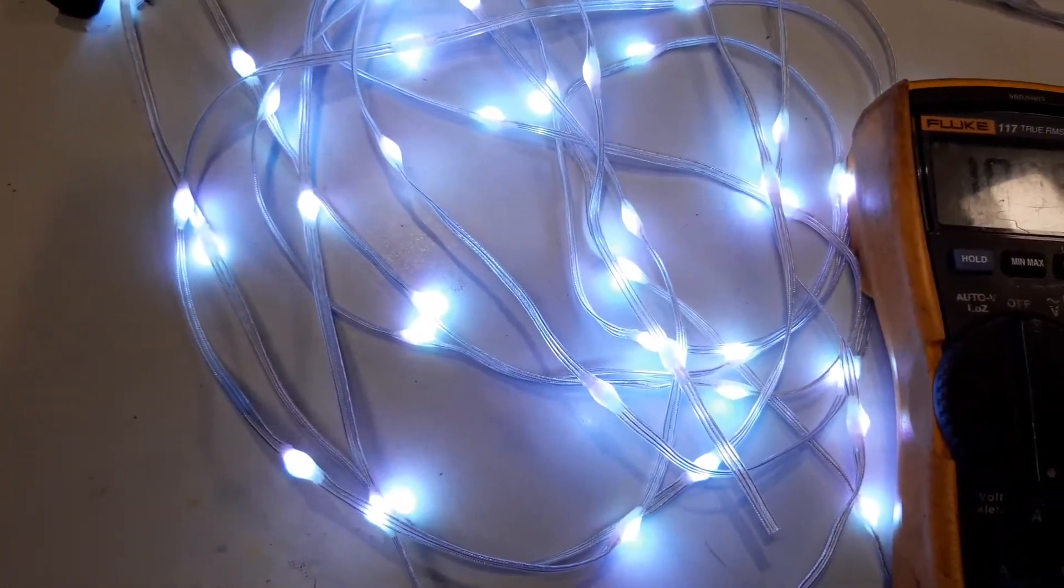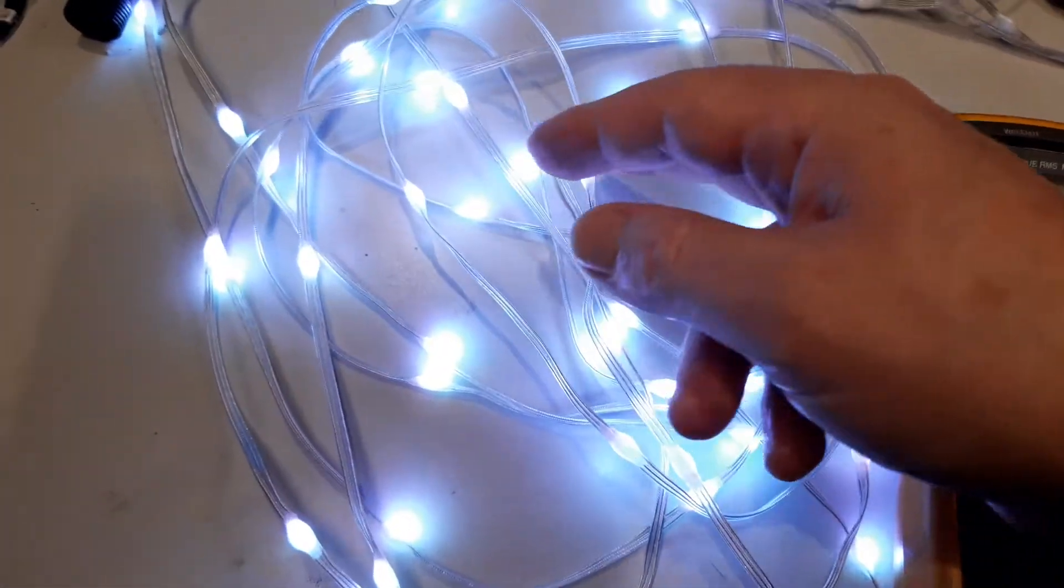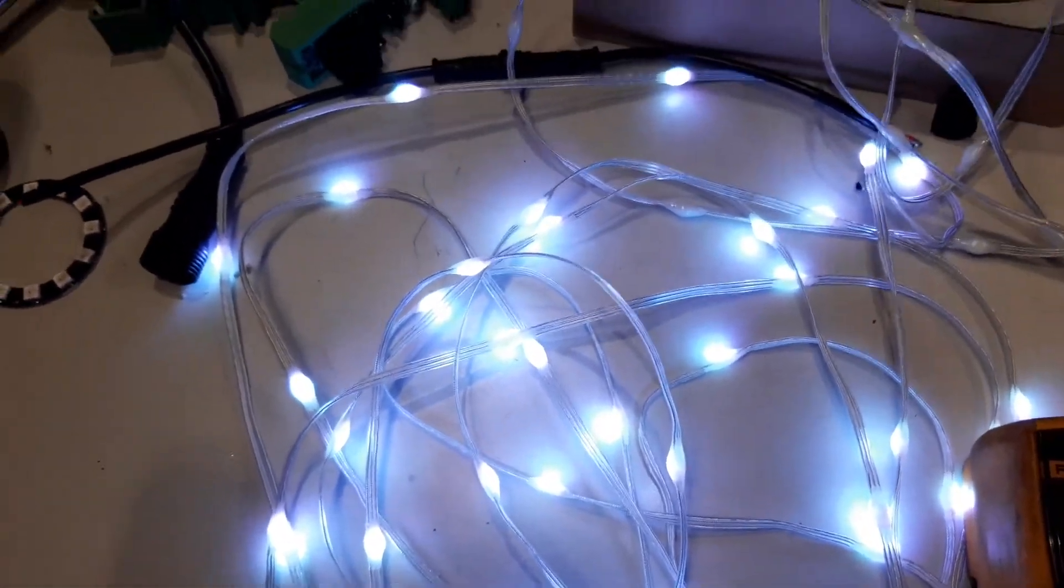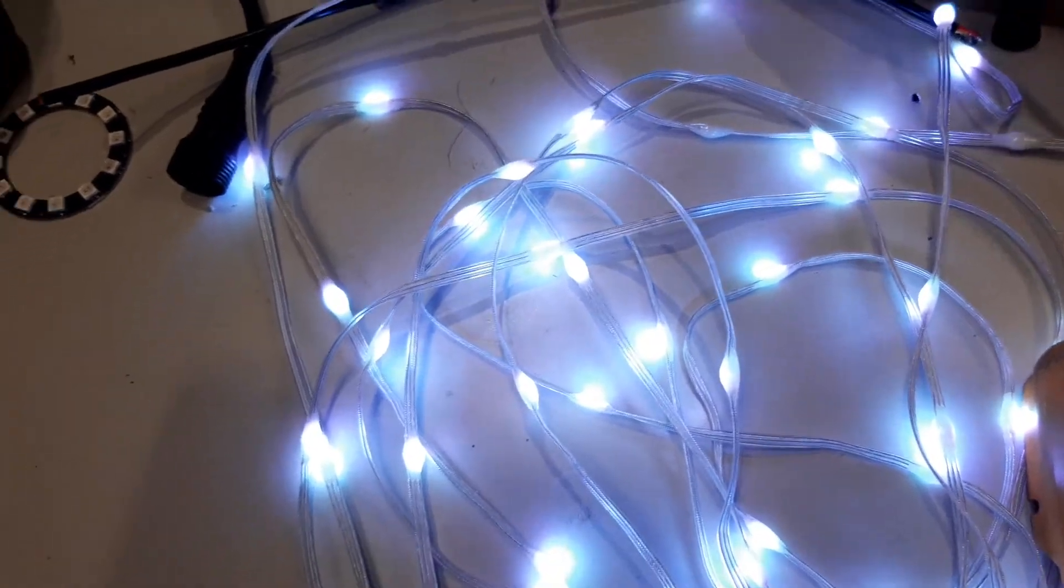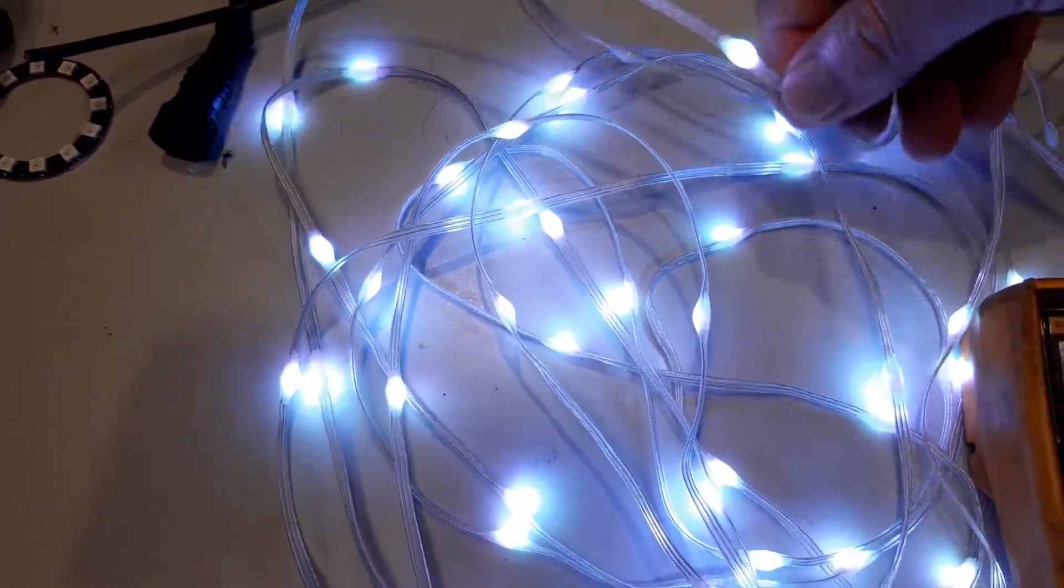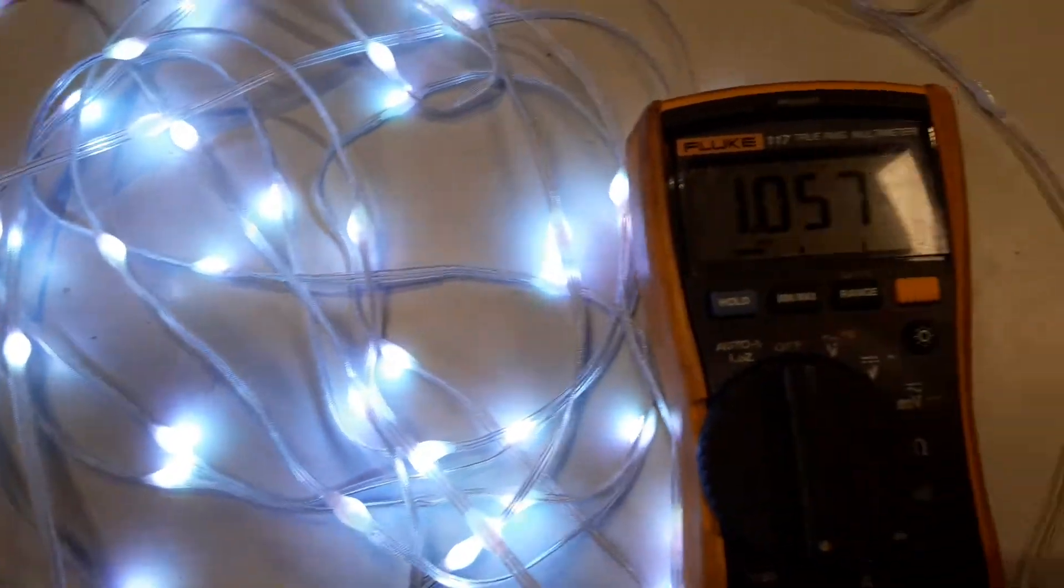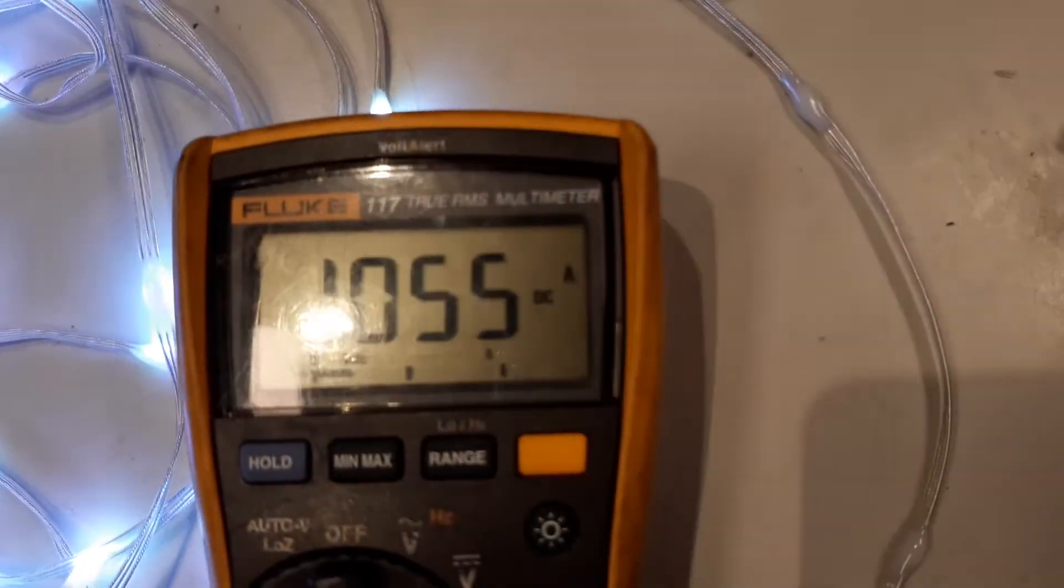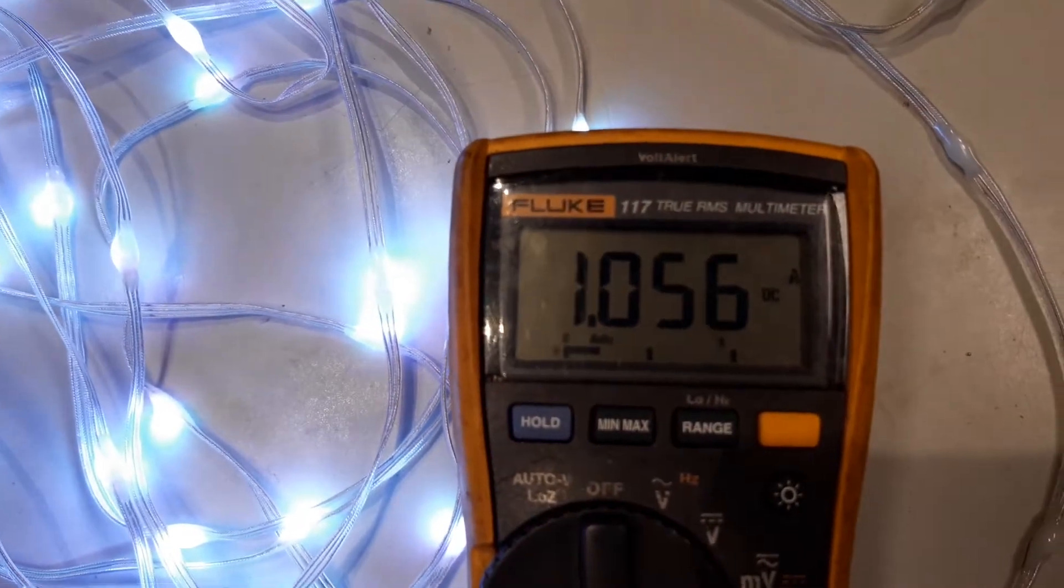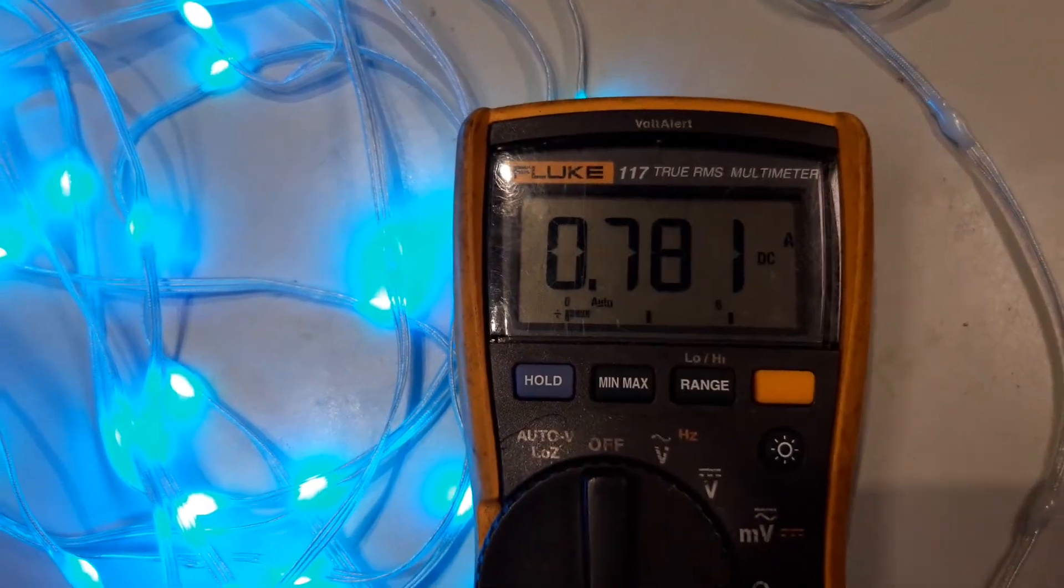As you can see, that string of 50 is pulling pretty much one amp, so that equates to 20 milliamps per LED or per pixel. There's a few that you can see that's actually part of the roll. They're not folding, so that's drawing about an amp.